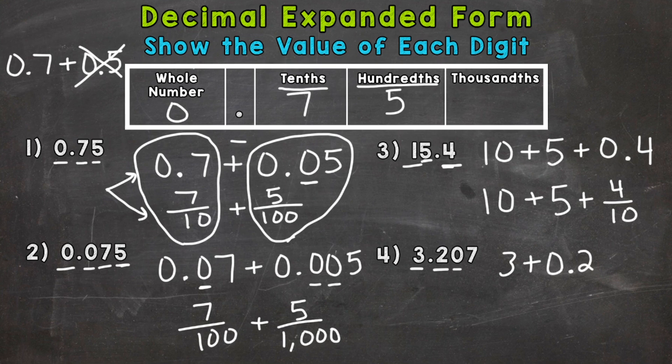Now the hundredths place, we have a zero, so we do not need to include that in our expanded form. The seven is in the thousandths. So plus, and we need two zeros, I'll squeeze in here, seven thousandths there.